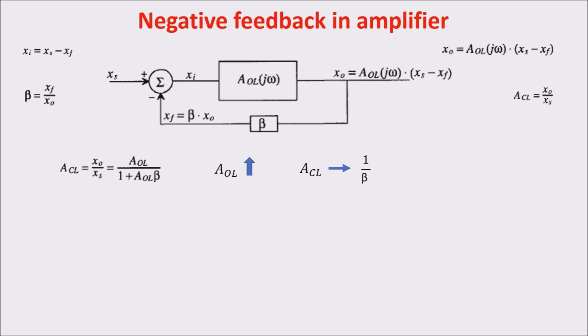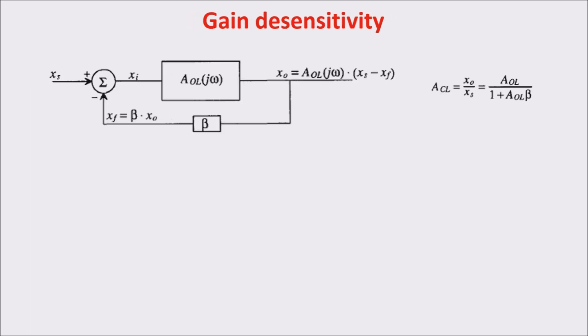When used in the design of amplifiers, feedback can provide a number of advantages. These advantages include desensitizing the gain to process parameter variation, reducing nonlinear distortion, reducing the effect of noise, extending the useful bandwidth of the amplifier and controlling the input and output impedance levels. Let's see the feedback advantages one by one.